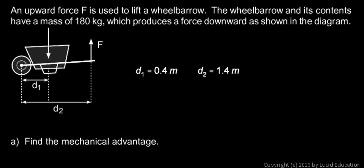You get a mechanical advantage because the lever arm for your upward force is larger than the lever arm for the downward force. So you get a mechanical advantage that is the ratio of those two distances. And that's what we're told to find first.